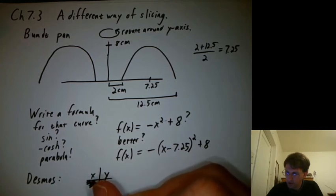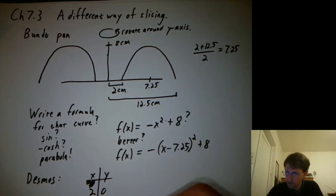We made a little table. We had what? 2 comma 0, 12.5 comma 0, and 7.25 and 8.